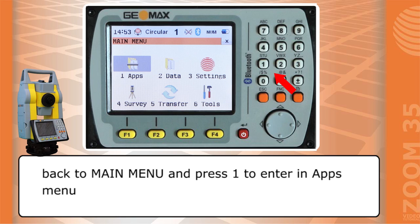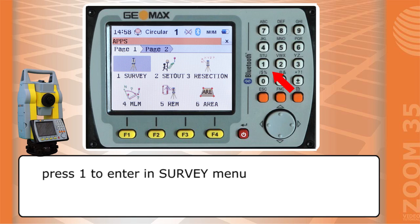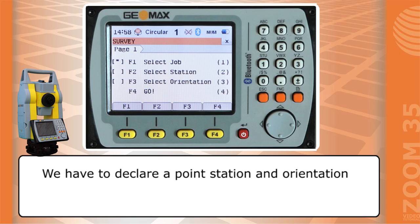Back to main menu and press 1 to enter in apps menu. Press 1 to enter in survey menu. We have to declare a point station and orientation. Press F2 to input station data.